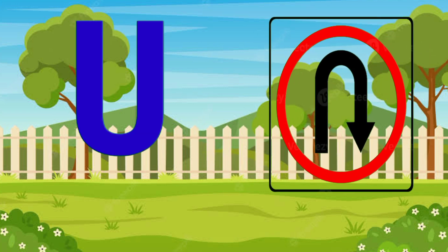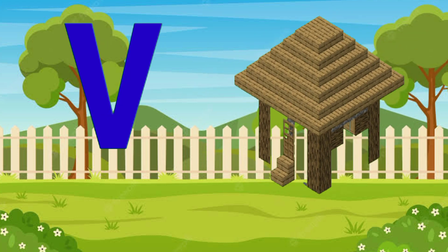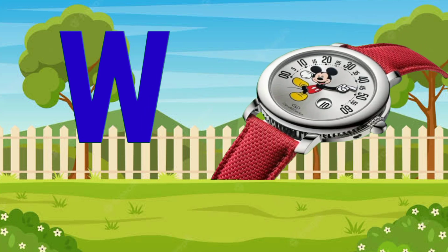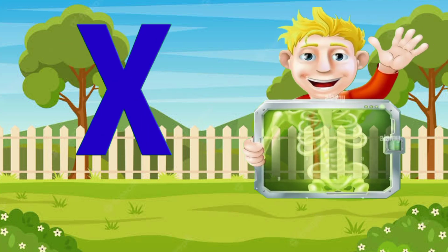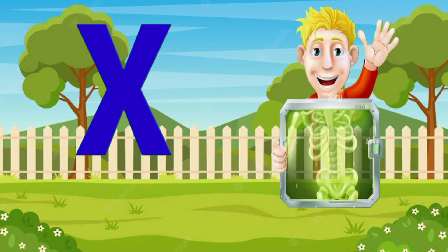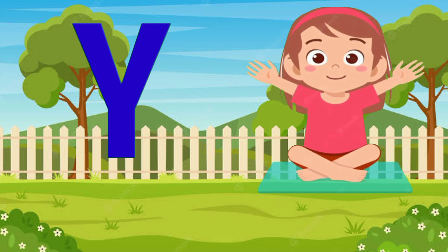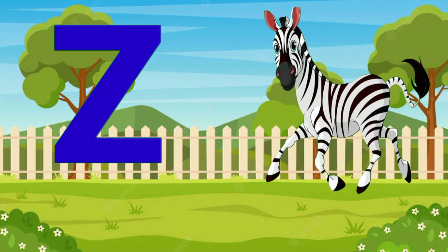U for uton, V for village, W for watch, X for x-ray, Y for yoga, Z for zebra.